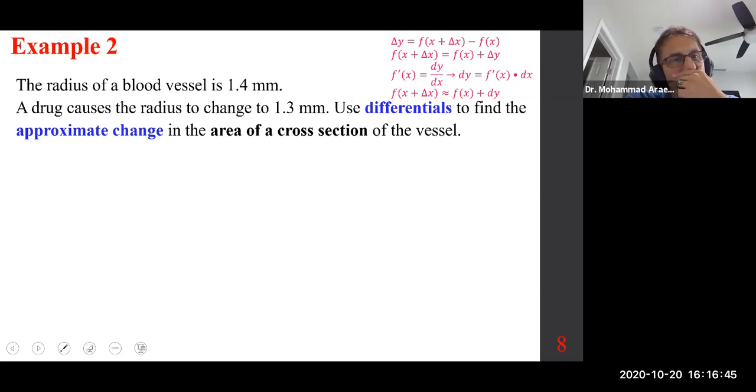The radius of a blood vessel is 1.4 millimeters. The drop causes the radius to change to 1.3 millimeters. So it's changing, it's reducing, it's decreasing. We want to use differentials to find the approximate change in what? The area of a cross section. So first thing first, we need to know the area of a cross section is a circular shape. Then we want to relate the area to the radius. So right away, it's a formula that we have discussed. The area is equal to πr².